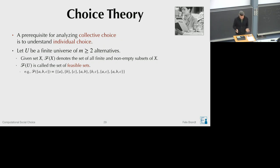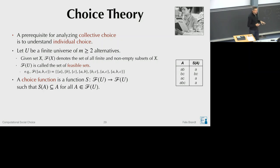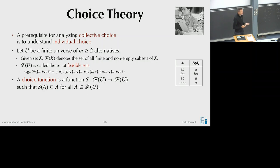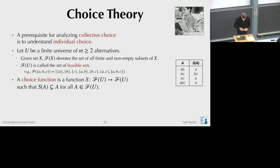For example, if the universe consists of three alternatives A, B, C, we would have seven feasible sets. A choice function is a function that maps every feasible set to a feasible subset — the decision maker chooses some of these items. Choosing several items like A, B, and C doesn't mean you take all three; it means you are indifferent between all of them. This is formally a mapping from F(U) to F(U), with the condition that you only choose a subset of the alternatives available in the feasible set.